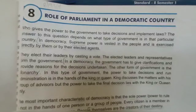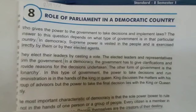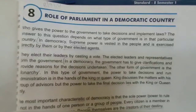In democracy, people give the power to government to take decisions and implement the laws. People elect the government of their choice through election. In democracy, the government has to make clarification and provide the base for the steps and decisions taken.